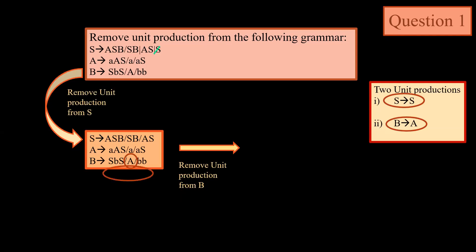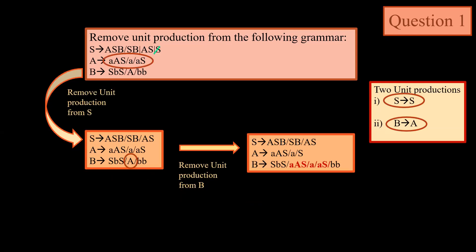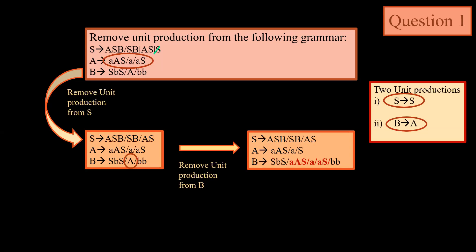We will replace B → A with all the productions on the right side of A. The final output for B is: B → SB | SA | A | AS | BB. We have replaced capital A with all the productions of A on the right side. Original productions remain as they are. This is the final output we generate.